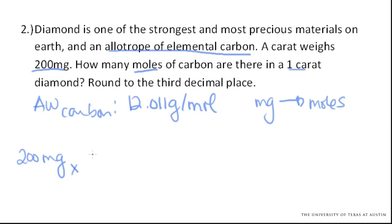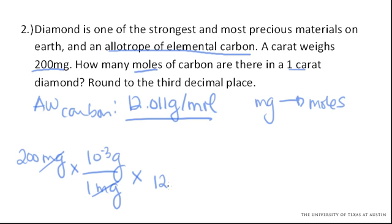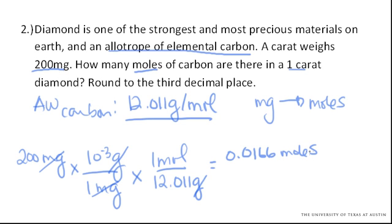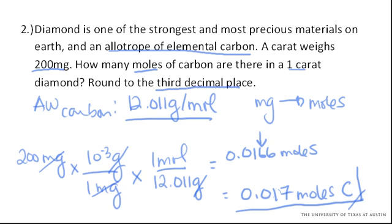Let's get rid of milligrams. We know that 10⁻³ grams equals 1 milligram — milligrams cancel. Now to get from grams to moles, we use our atomic weight: 12.011 grams per mole. Grams cancel. Multiply that out and we find 0.0166 moles. Rounded to the third decimal place, that is 0.017 moles of carbon, which corresponds to one carat diamond. Pretty nice.